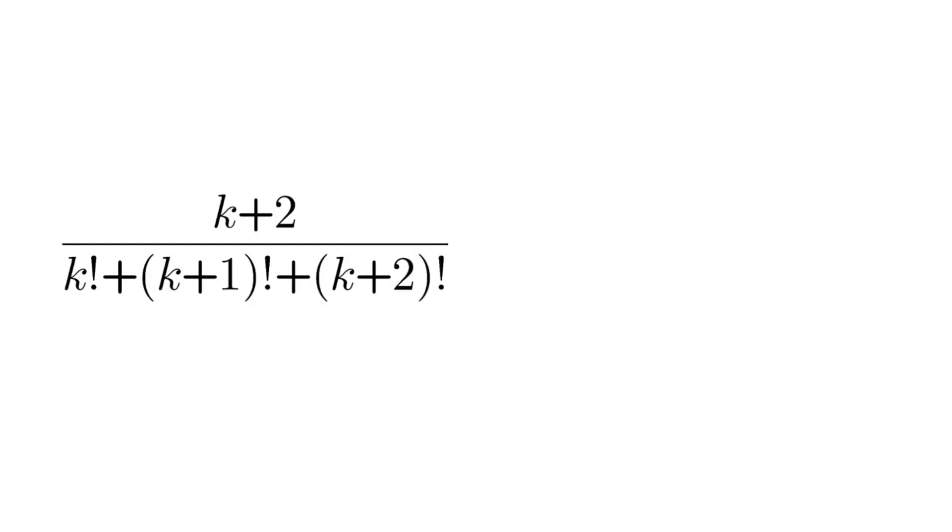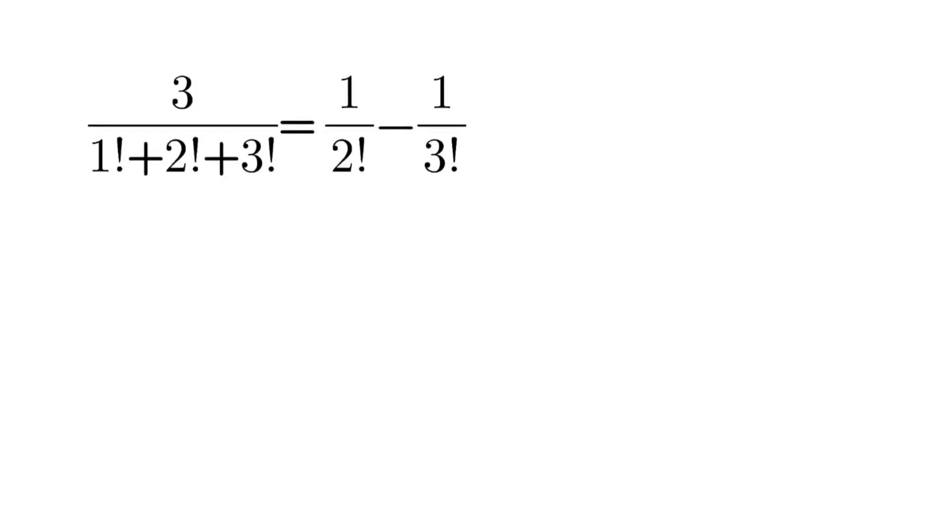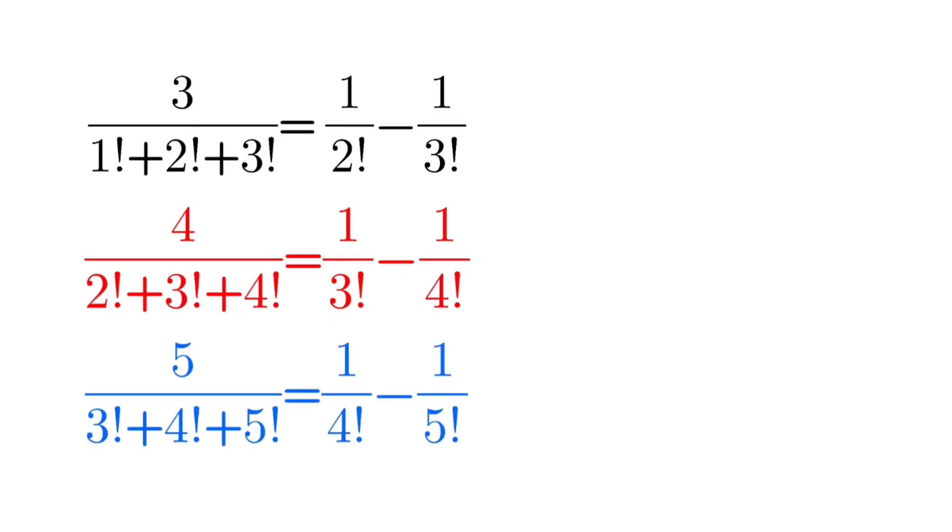You see that our general case or general term actually can be written as subtraction of two fractions simplified. Now let's see: our first term can be written as 1 by 2 factorial minus 1 by 3 factorial. Second term as 1 by 3 factorial minus 1 by 4 factorial, and third term can be 1 by 4 factorial minus 1 by 5 factorial, and so on.